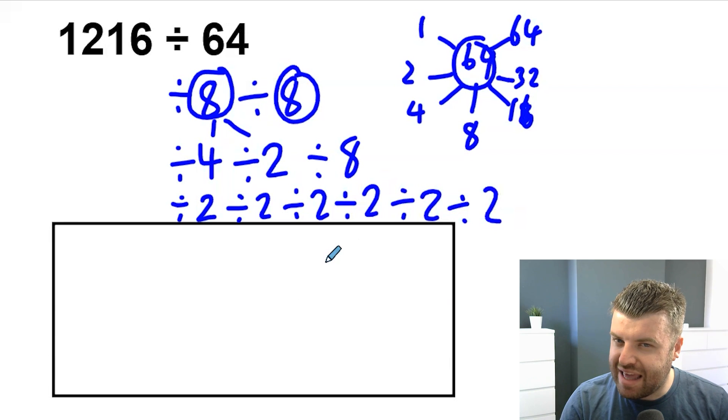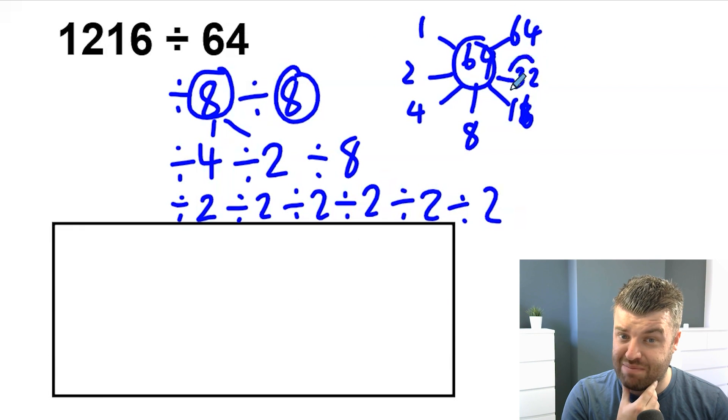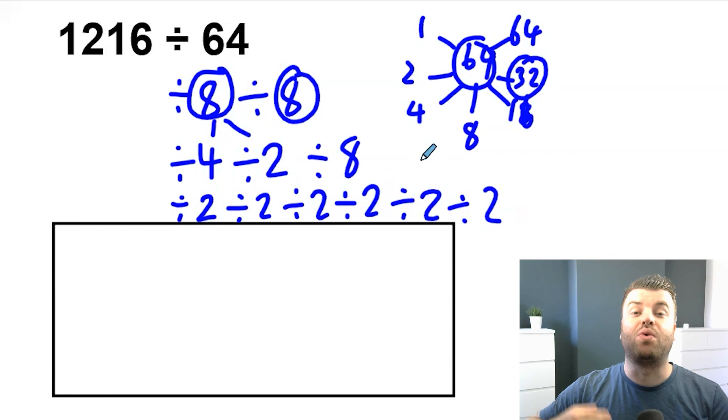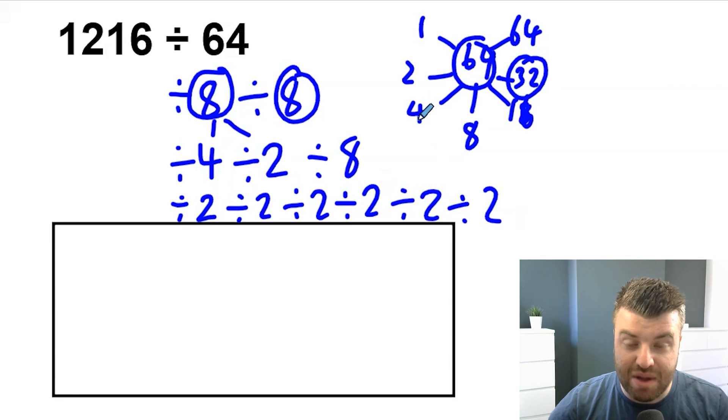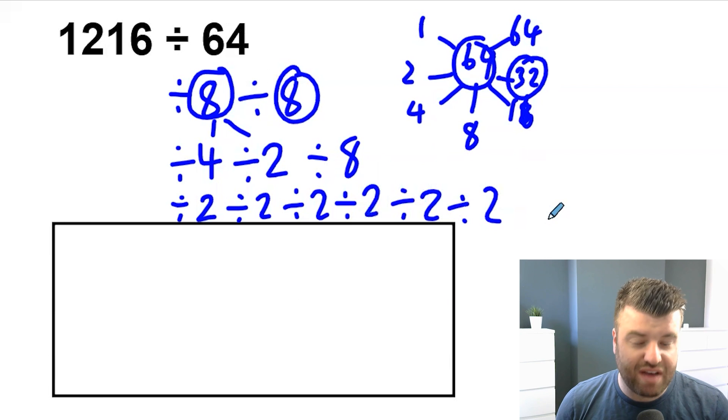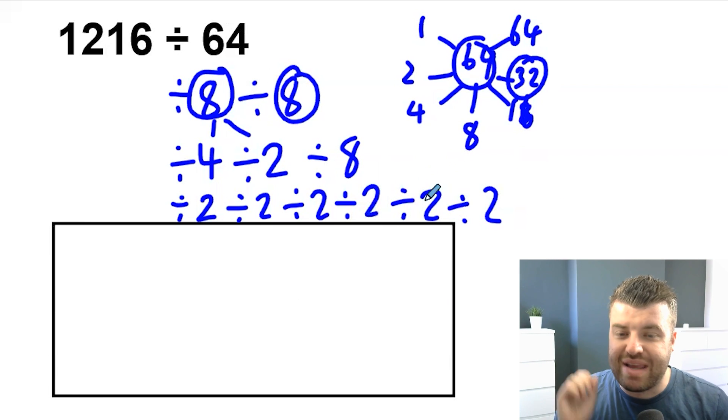So the point I'm making here is we don't have to stop at two factors. If you split into two factors and you find actually one of the numbers is still tricky, maybe you chose 32. You can split that up again. And actually, we keep going until we get to what are called the prime factors of a number. Every single number that exists has prime factors. 64 has 1, 2, 3, 4, 5, 6 prime factors.